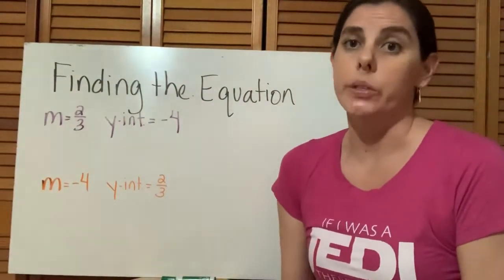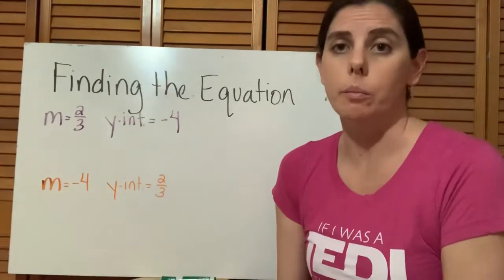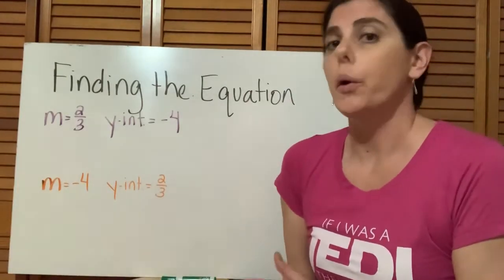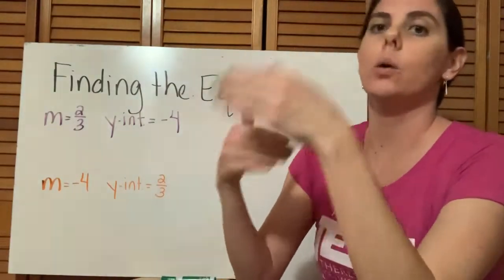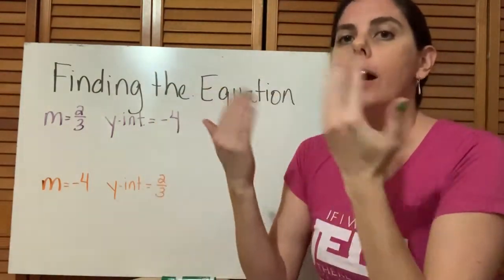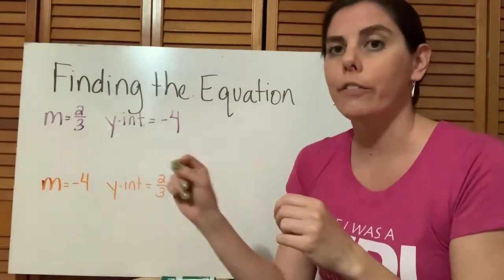In section 4.6, we're still going to be working with our slope-intercept form, but now what we're going to do is learn how to create the equation. So kind of working backwards now. We're going to find the equation instead of graphing the line.